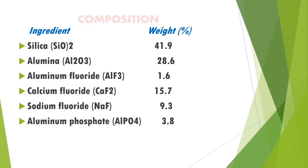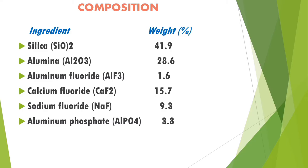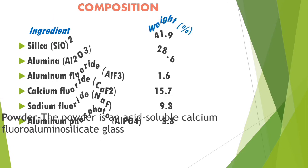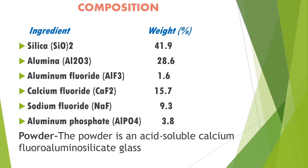Composition of GIC: silica is present at about 41.9%, alumina at 28.6%, aluminium fluoride at 1.6%, calcium fluoride at 15.7%, sodium fluoride at 9.3%, and aluminium phosphate at 3.8% by weight. The powder used is an acid-soluble calcium chloroaluminosilicate glass.